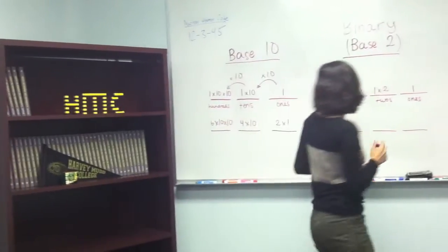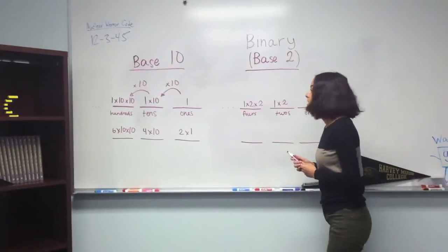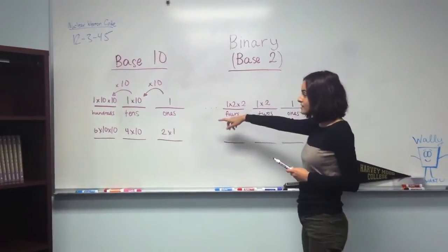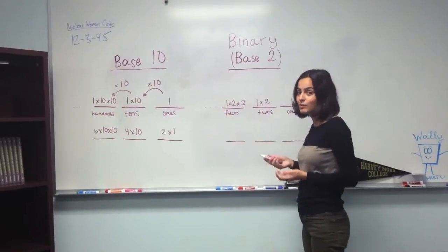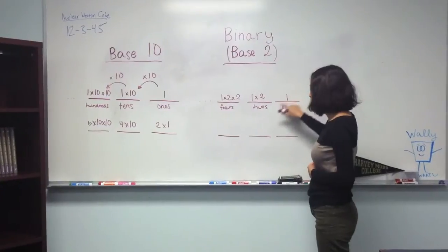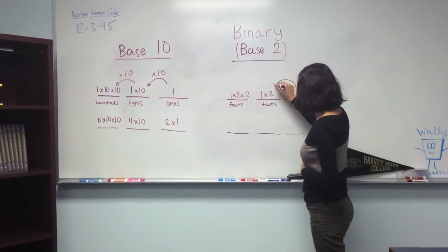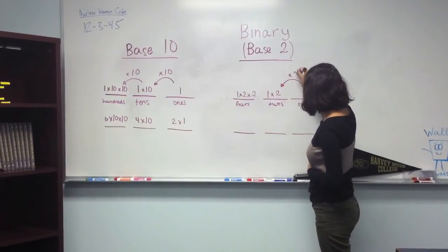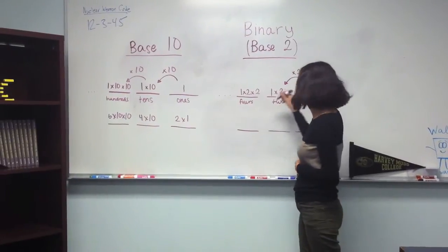So now onto binary, also called base 2. Base 2 is exactly the same as base 10, except you replace everything with 2s. So in the ones place, you have a 1. The next place, you multiply by 2, you get the 2s place. And the next place is the 4s place.